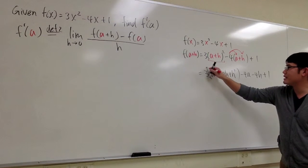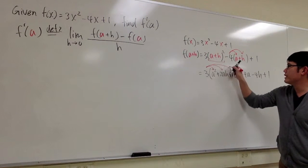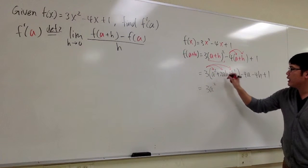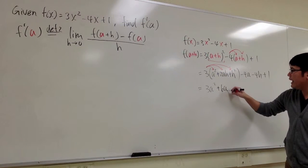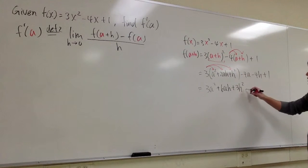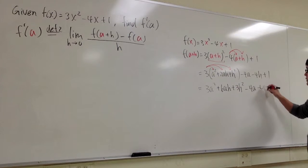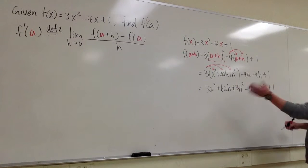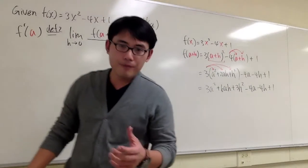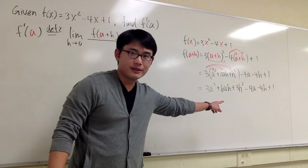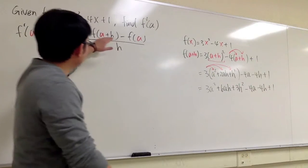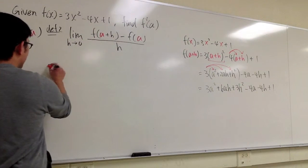And now for this part, let's just distribute the 3 all the way into the first parentheses. I have 3a² + 6ah + 3h² - 4a - 4h + 1. So that's what we have, and now with that part, that's just computations. I'm going to plug that in into the first, so this is what we are going to get.